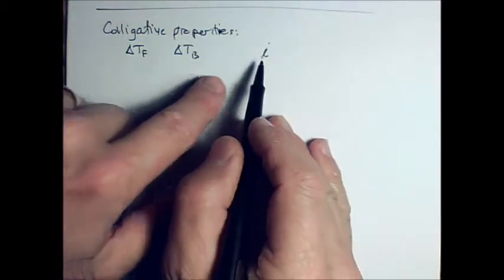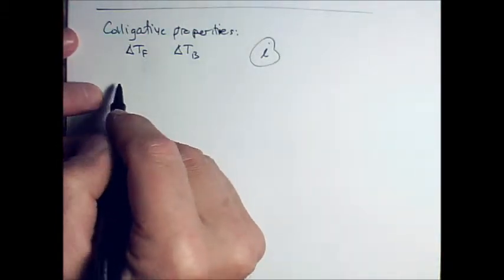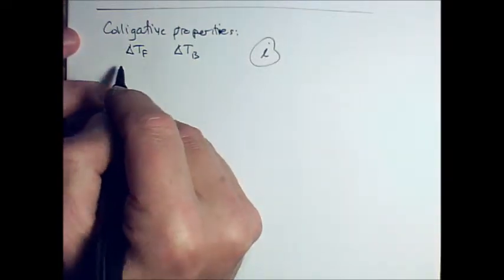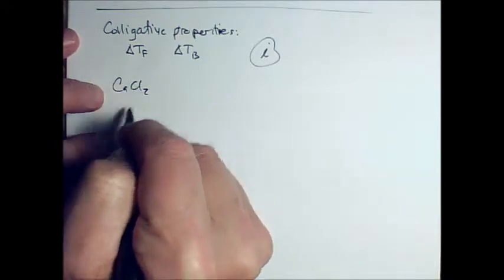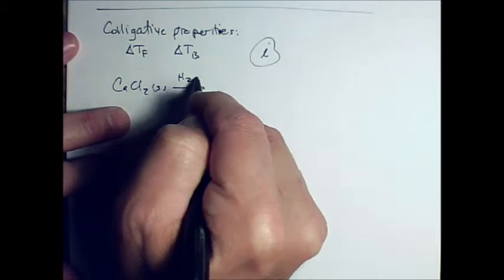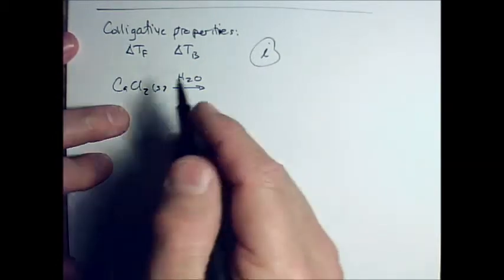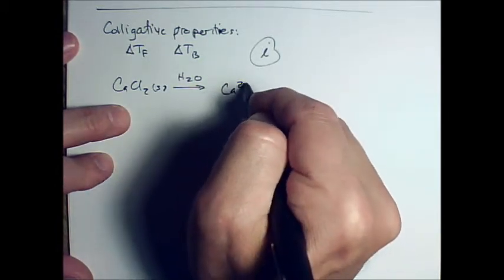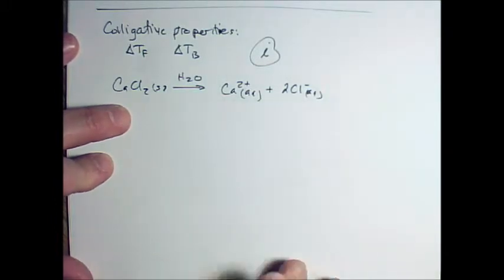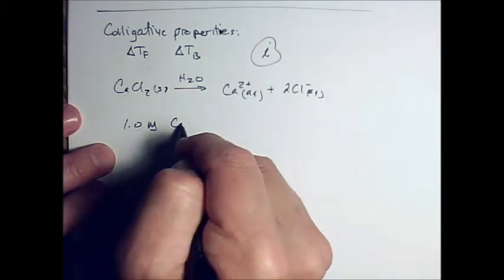Molarity of particles is kind of the same idea as the Van Hoff factor. If I have something that has, say I have calcium chloride, which if it's a solid and I put it in water, how many particles do I get? Three particles. I get one calcium and I get two chloride particles for a total of three particles, right?